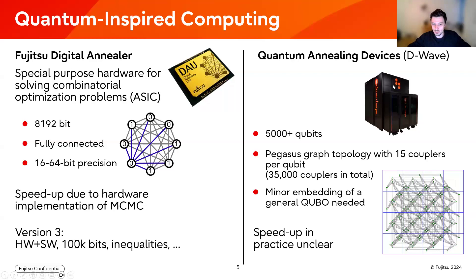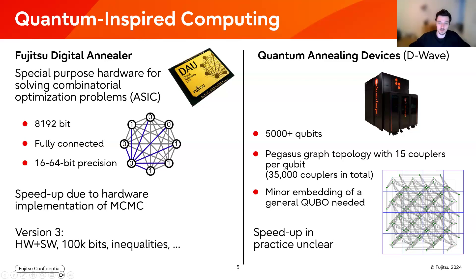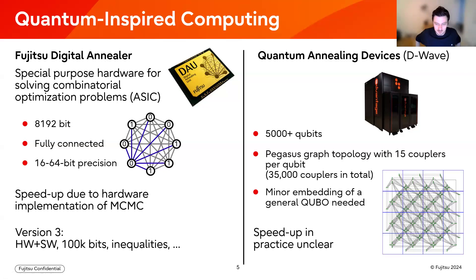A comparison to quantum annealing devices — specifically the D-Wave machine — may be helpful. Normal D-Wave machines can handle 5,000-plus qubits. They have a specific topology on which the qubits are laid out, with a certain number of couplers per qubit. What you need to do is called minor embedding: if you have a QUBO you want to solve using an annealing device, you have to put it on this device and make sure it fits the connectivity of the qubits. The speed-up for a general problem in practice is always unclear — you always have to put it to the test, as we also have to do for our digital annealer.